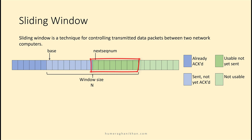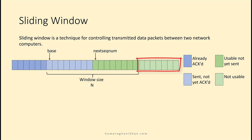The places in the window are available, and as soon as the upper layer sends some packets, the window will accommodate them and send their copies on the transmission channel. The light green color places are not usable until acknowledgements of some packets are received and the window slides.